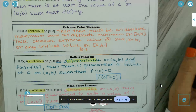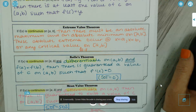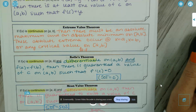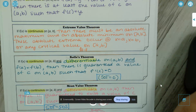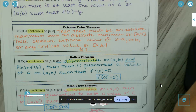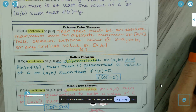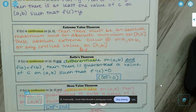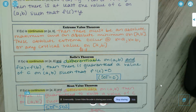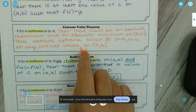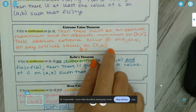Extreme Value Theorem: if f of x is continuous on [a, b], then there must be an absolute max and an absolute min on [a, b]. Those absolute extrema occur at x = a, x = b, or any critical value of f on (a, b).